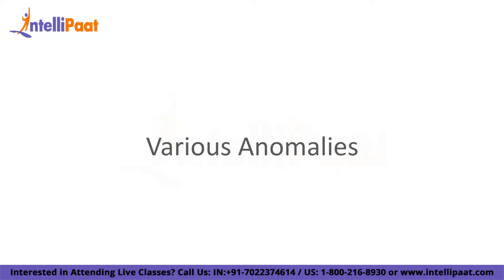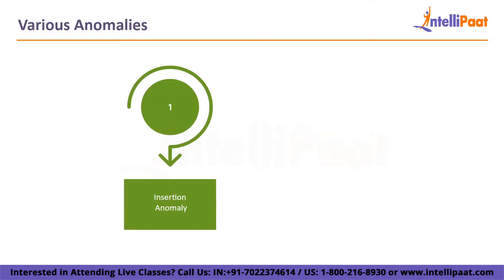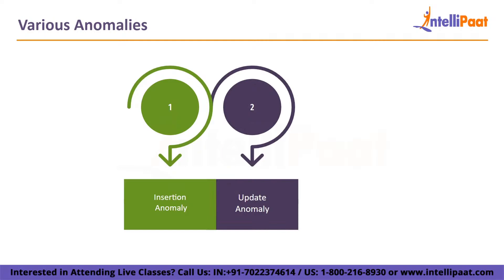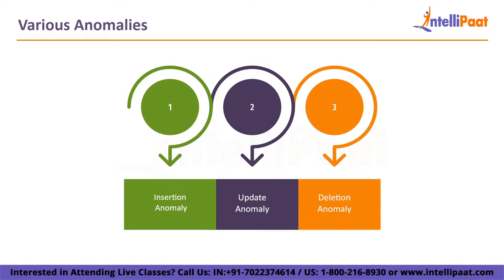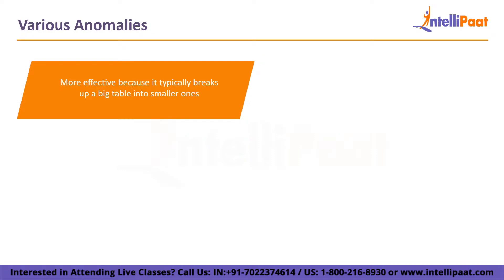Without normalization in SQL, we could run into three main anomalies. The insertion anomaly occurs when we are unable to insert data into a table without another attribute being present. The updation anomaly occurs when numerous rows must be updated in order to update a single data value. The deletion anomaly describes the circumstance in which some vital data is unintentionally lost when other data is deleted.